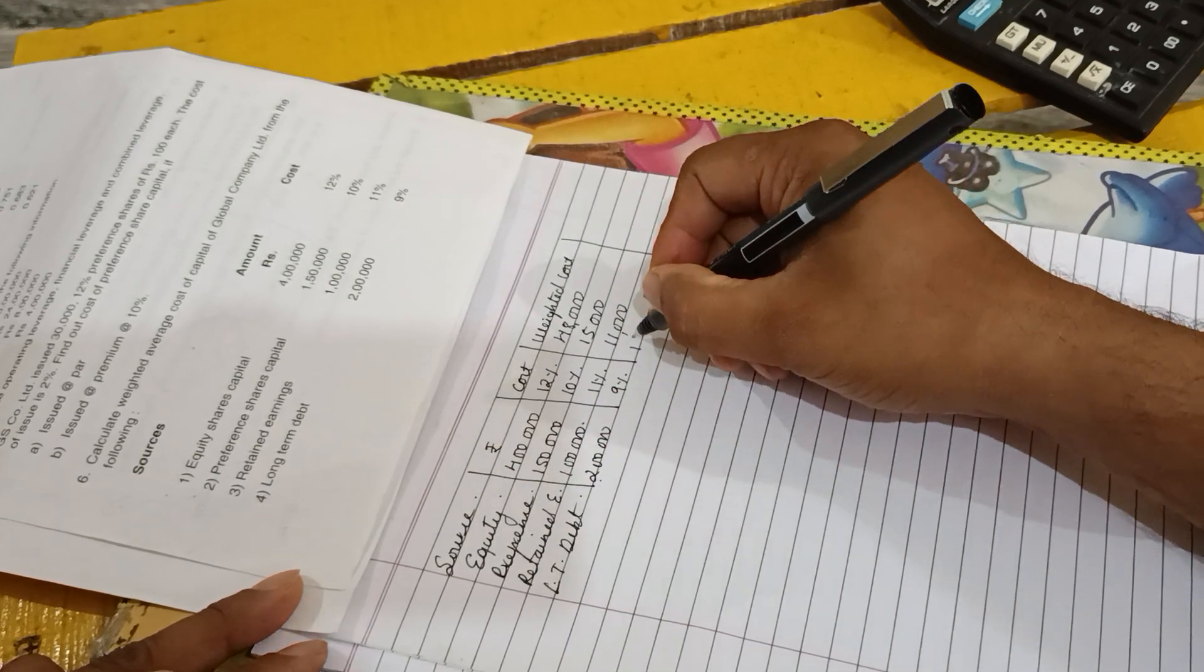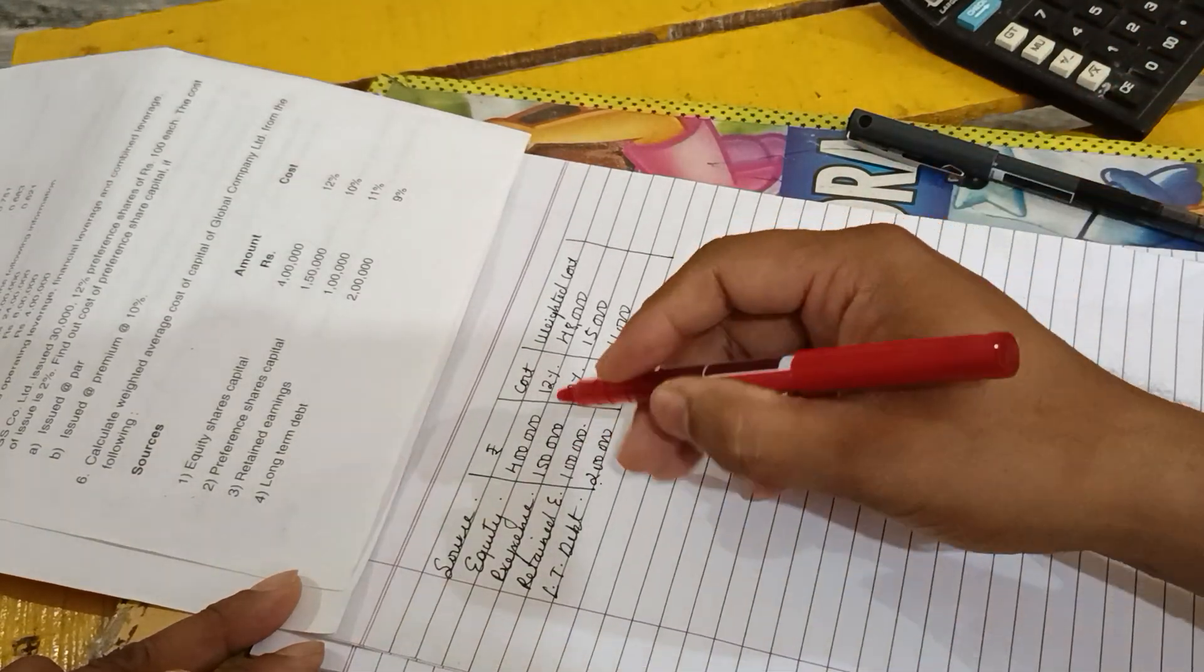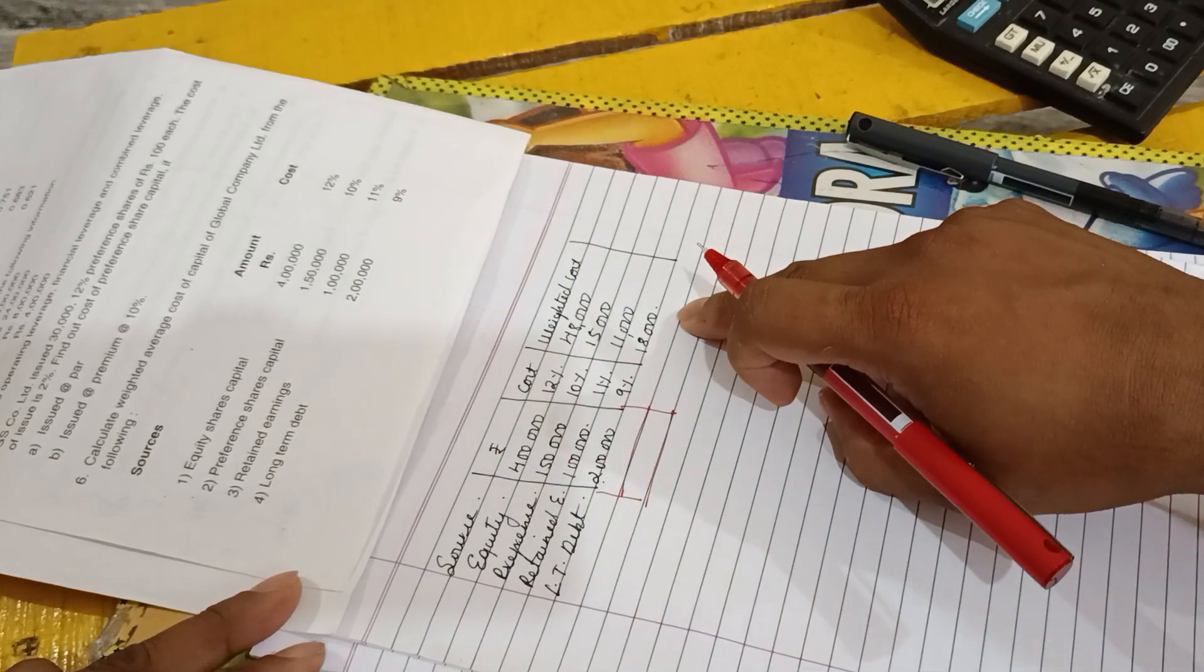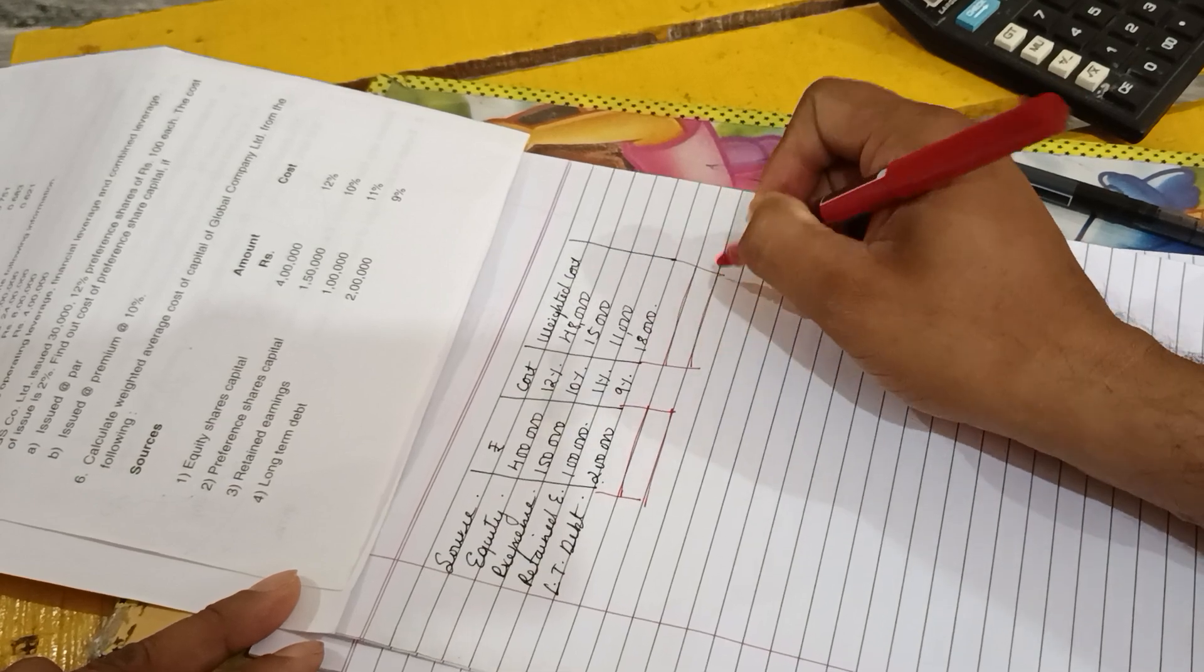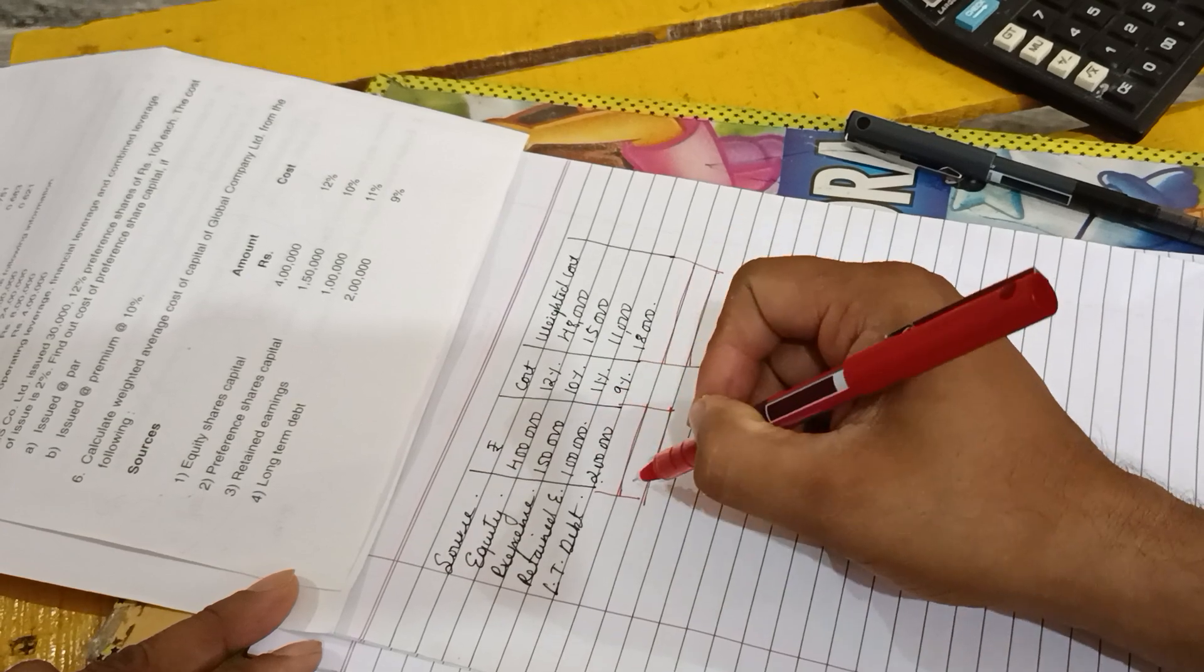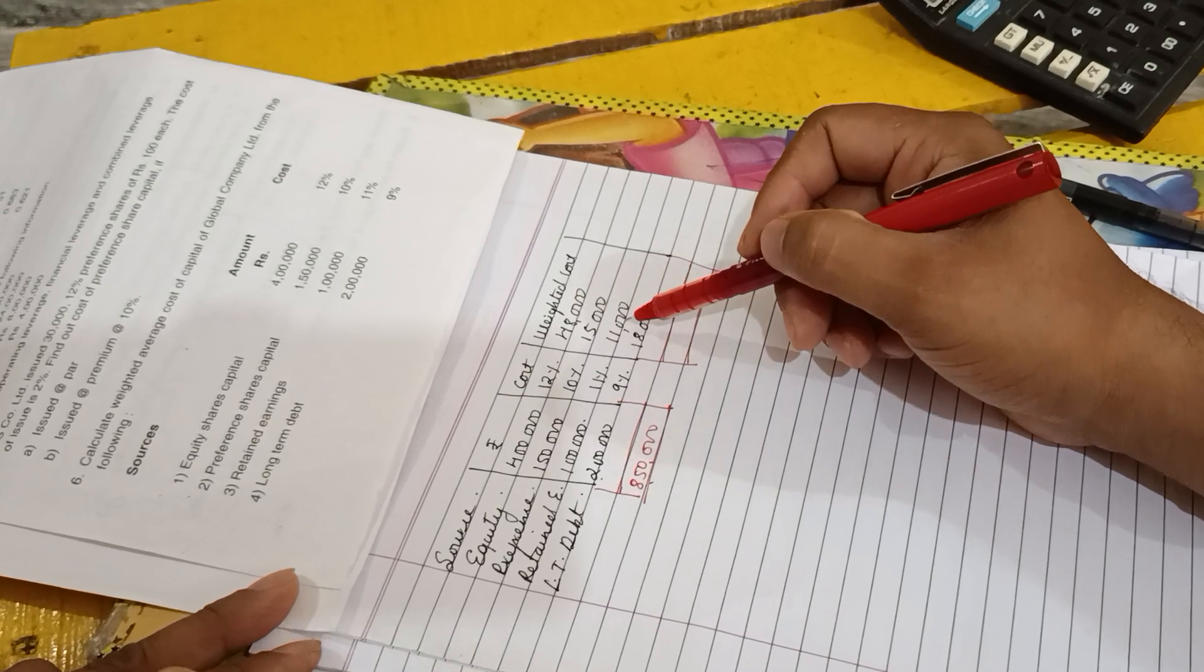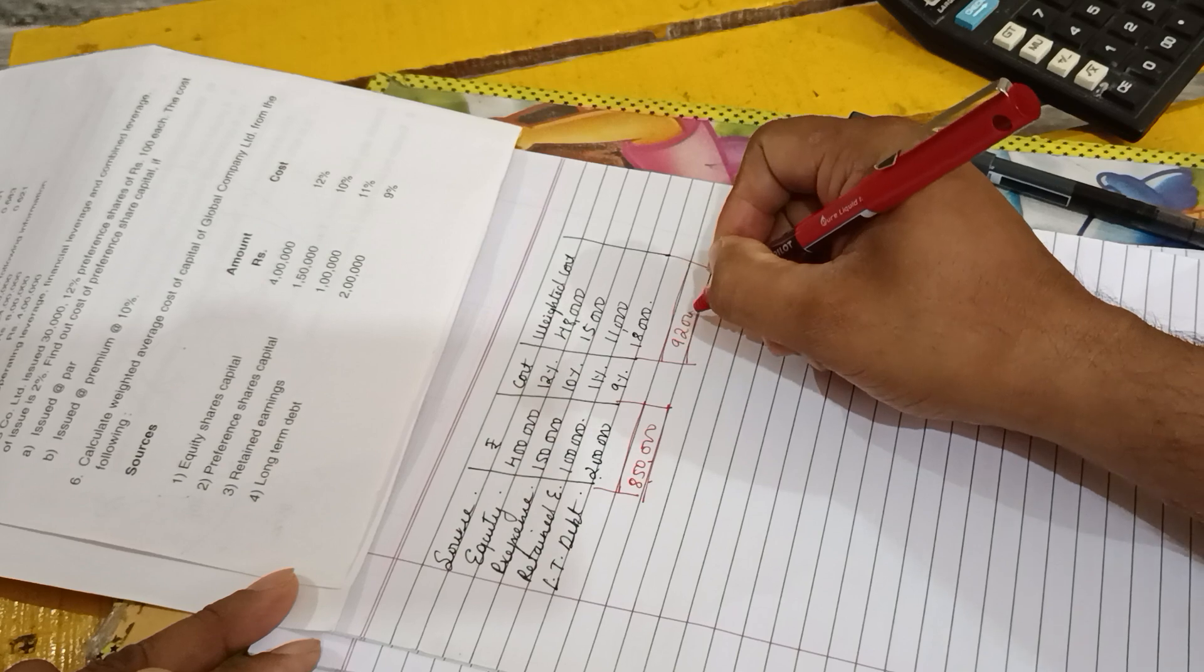So here, as part of the solution, you should make two totals: one total of the amount column, next total of the weighted cost. Amounts column total: four lakh plus one lakh fifty plus one lakh plus two lakh gives you eight lakh fifty. Weighted cost total: forty-eight thousand plus fifteen thousand plus eleven thousand plus eighteen thousand gives you ninety-two thousand.